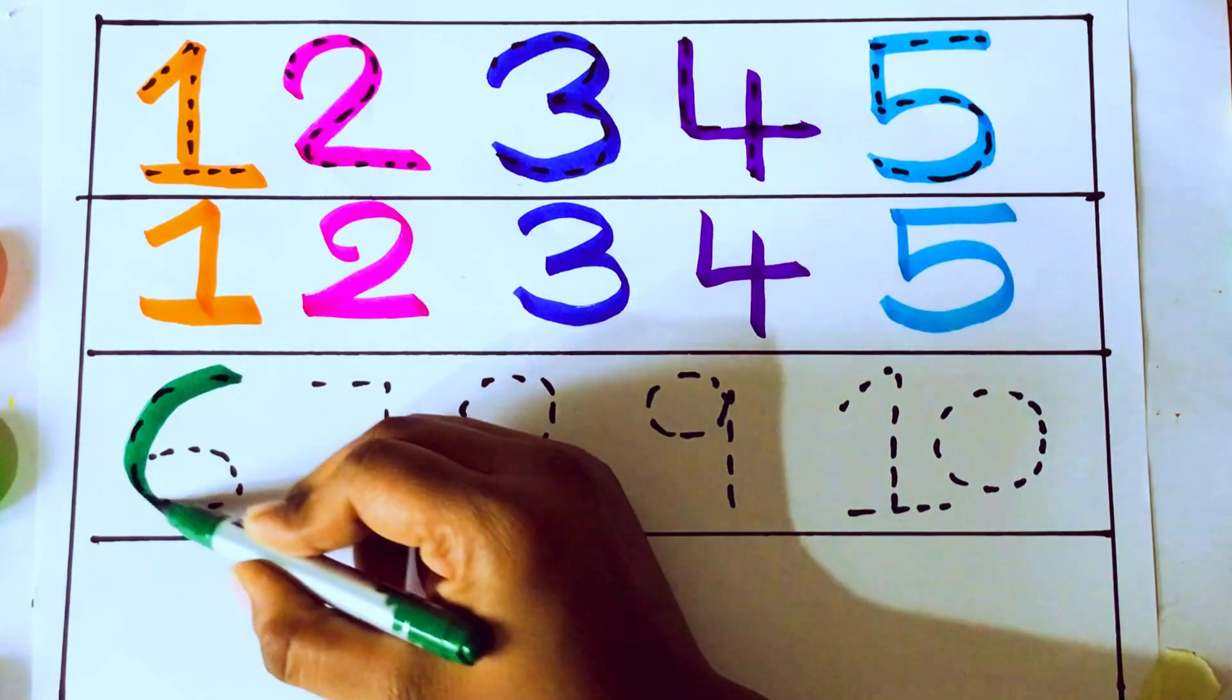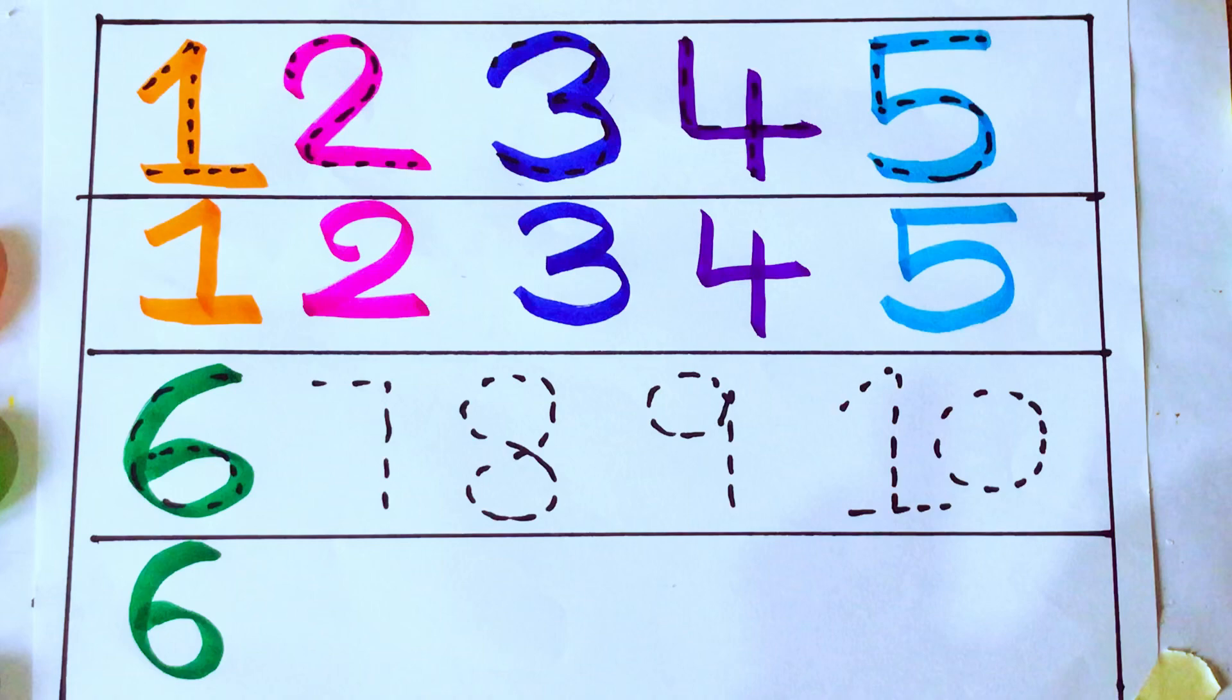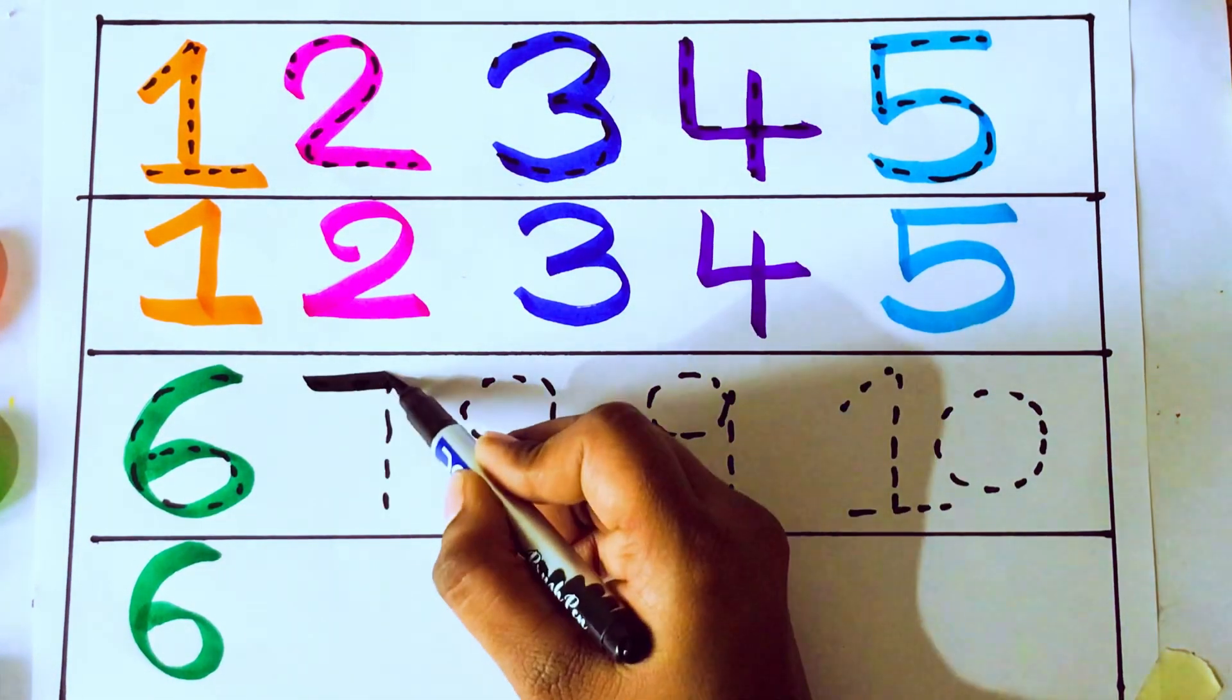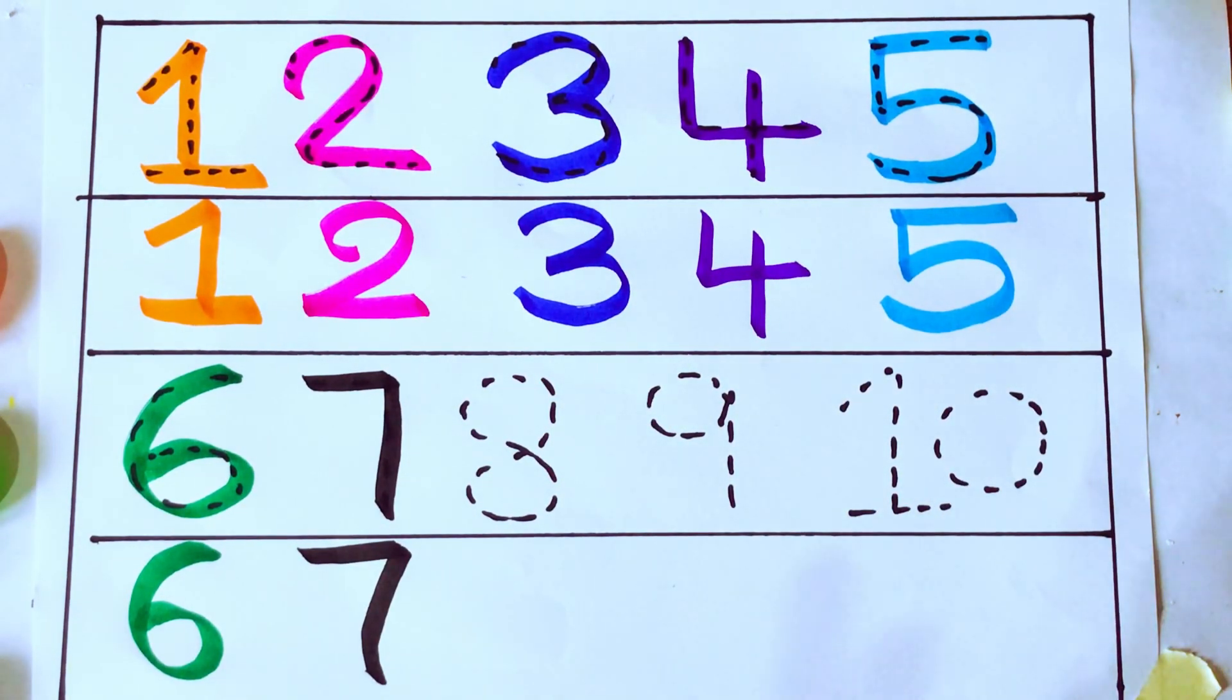5 after 6, S-I-X 6. 6 after 7, S-E-V-E-N 7. Brown color.